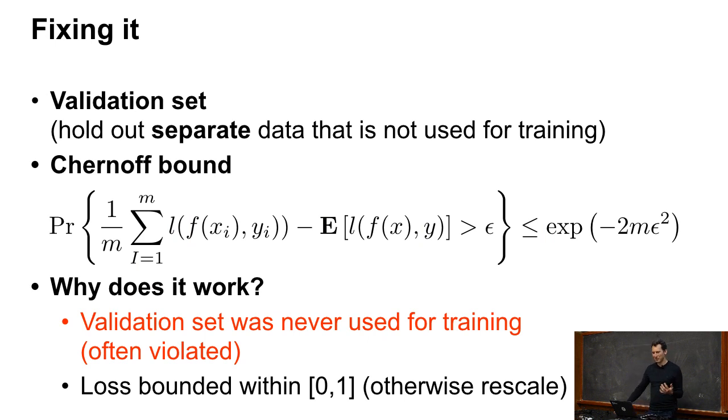Well, one way to fix it is you hold out a separate validation set. And then you can invoke something like a Chernoff bound. Who's heard of a Chernoff bound before? Nice. Okay, half the audience. So those of you who haven't, afterwards go to Wikipedia and look at that entry. But here's really what it does. It tells you that the empirical average doesn't deviate too much from the expectation with high probability. In this case, if I have a loss that's bounded between zero and one, and so what's important is that these are random variables that are well-behaved, so in this case bounded between zero and one, then the empirical average one over m sum over i equals one to m l of f of xi, yi doesn't deviate much from the expectation.